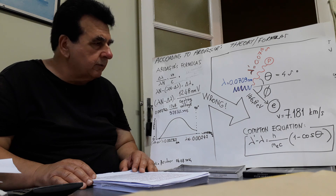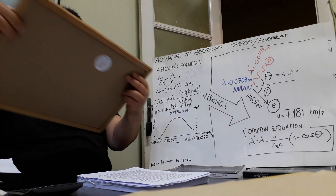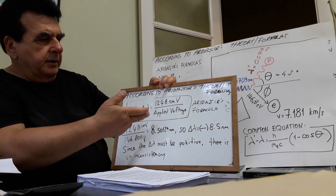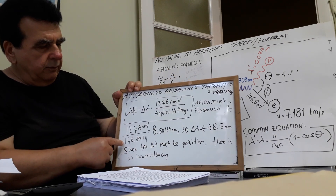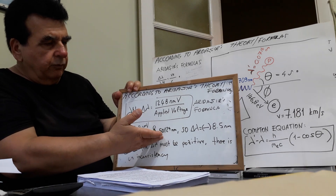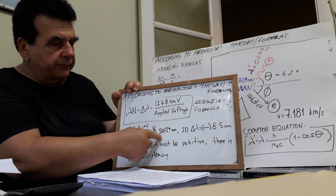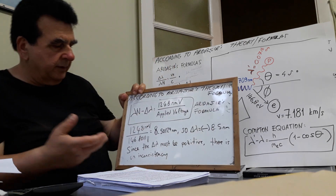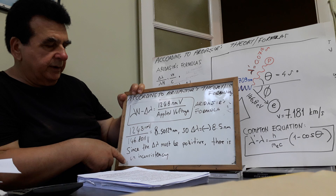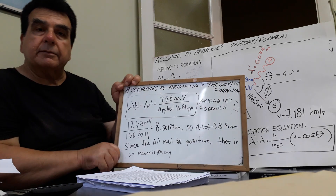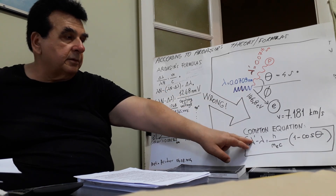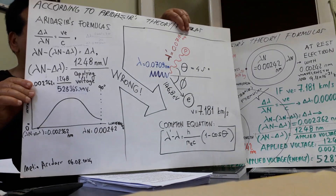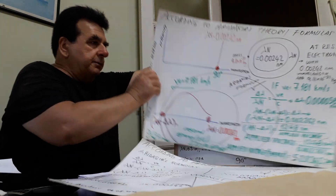I guess this is enough for this evening. Lastly, I want to show that if the applied voltage were 146.8 volts, we would find delta lambda equals 8.5 nanometer — meaning delta lambda would be negative 8.5. Since delta lambda must be positive, there is an inconsistency in the Compton equation.